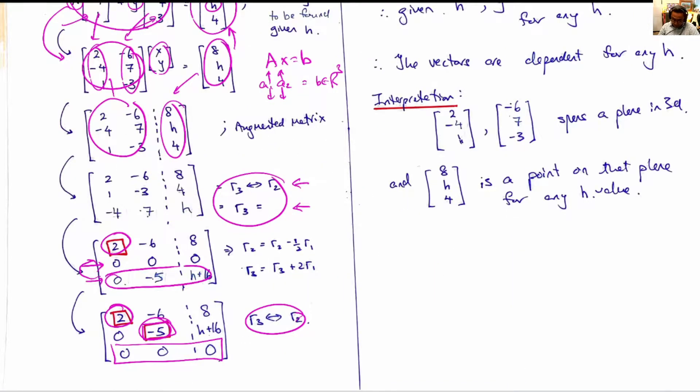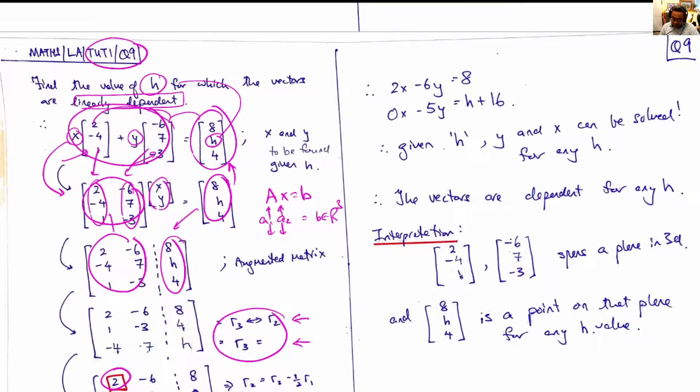We can solve for x and y for any h. Therefore, h is not important in this example. x and y can be found for any h, implying that these three vectors are dependent on each other regardless of h.